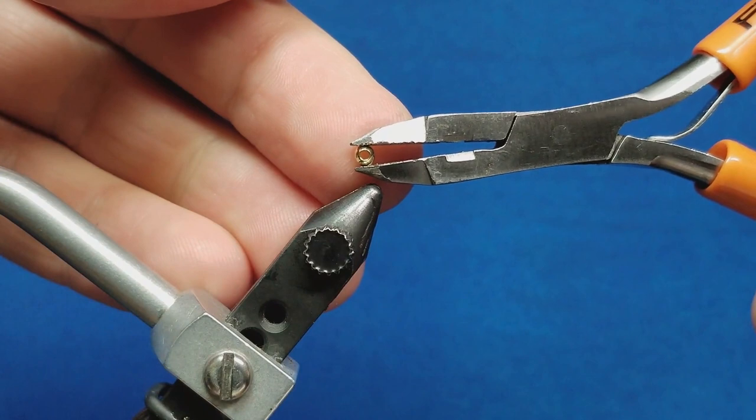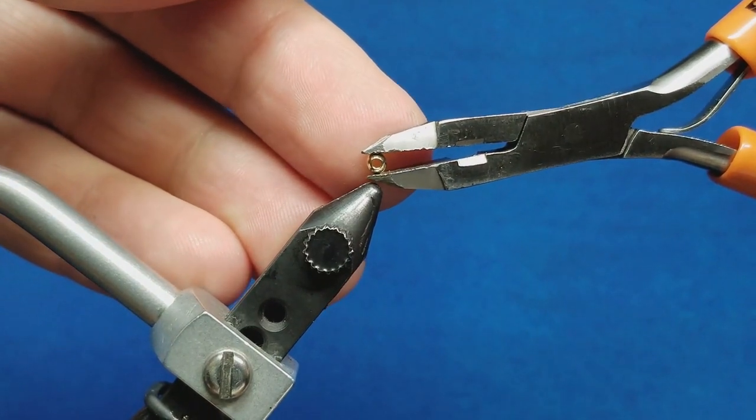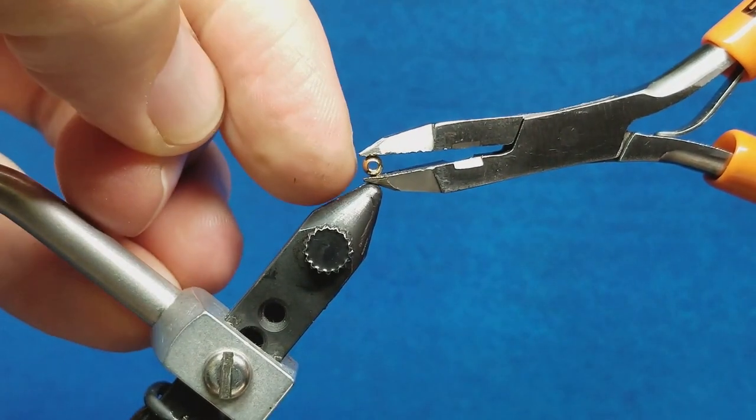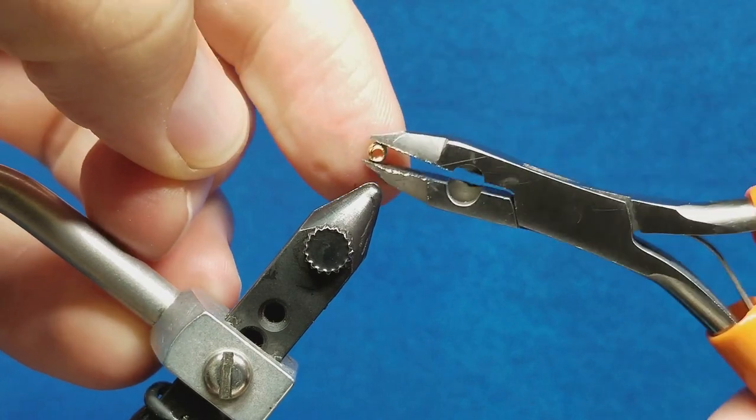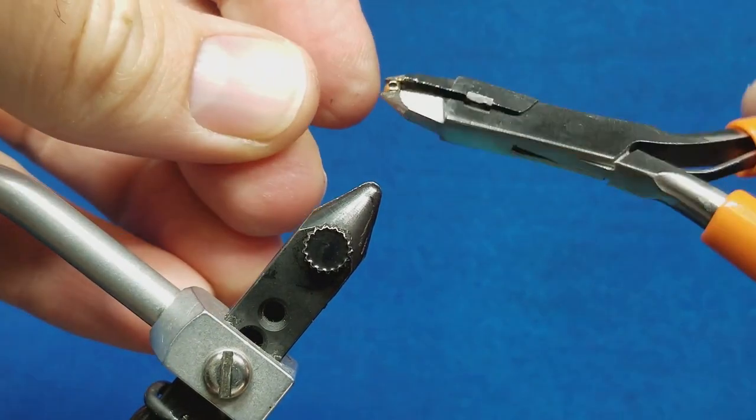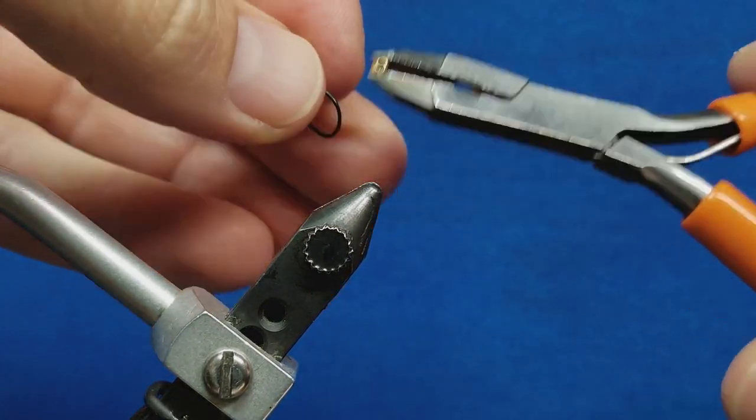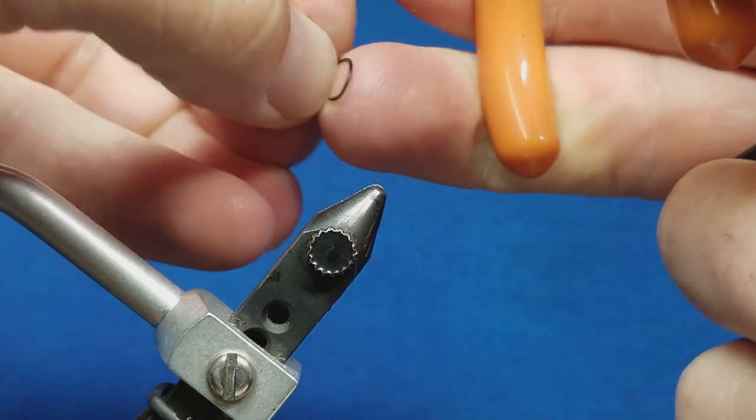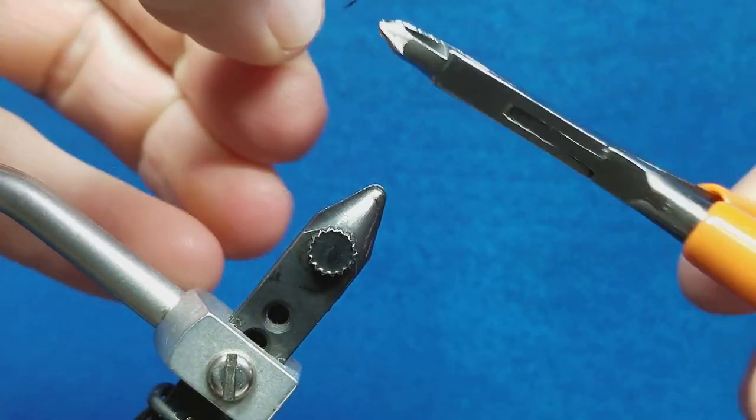Bead heads are a common addition in many nymph patterns. When working with them it's important to note that there is a narrow opening and a slightly wider opening. The narrow opening we refer to as the front because in the vast majority of patterns it's going to be the opening that goes over the point of the hook first.